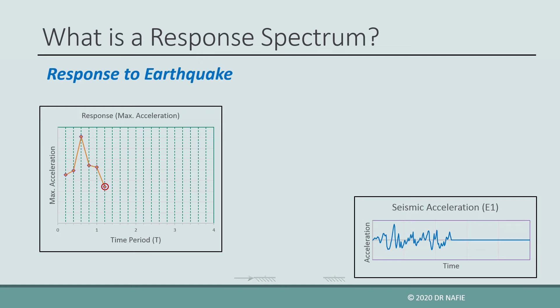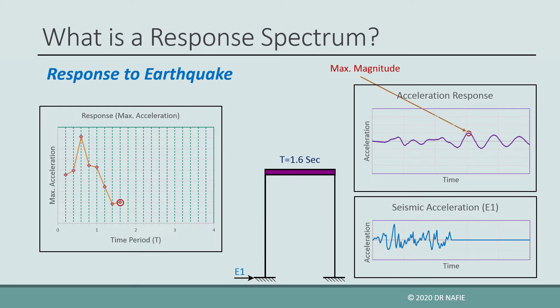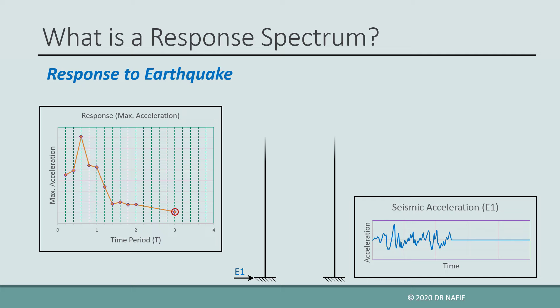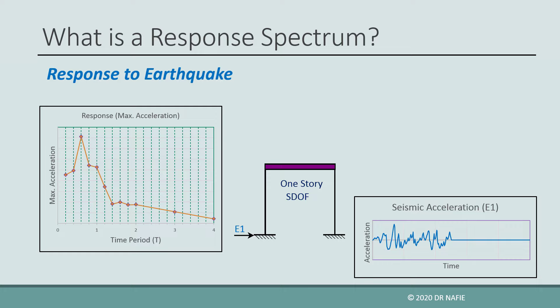This graph between the natural time period T and the maximum acceleration response is called the response spectrum curve for the earthquake motion E1. If any single degree of freedom building is subjected to the same exact earthquake motion E1, then we can obtain the maximum acceleration that could happen in this building using this response spectrum curve. Suppose that the natural time period of the building was found to be 0.9 seconds, then we locate this value on the x-axis and obtain the corresponding maximum acceleration from the graph.